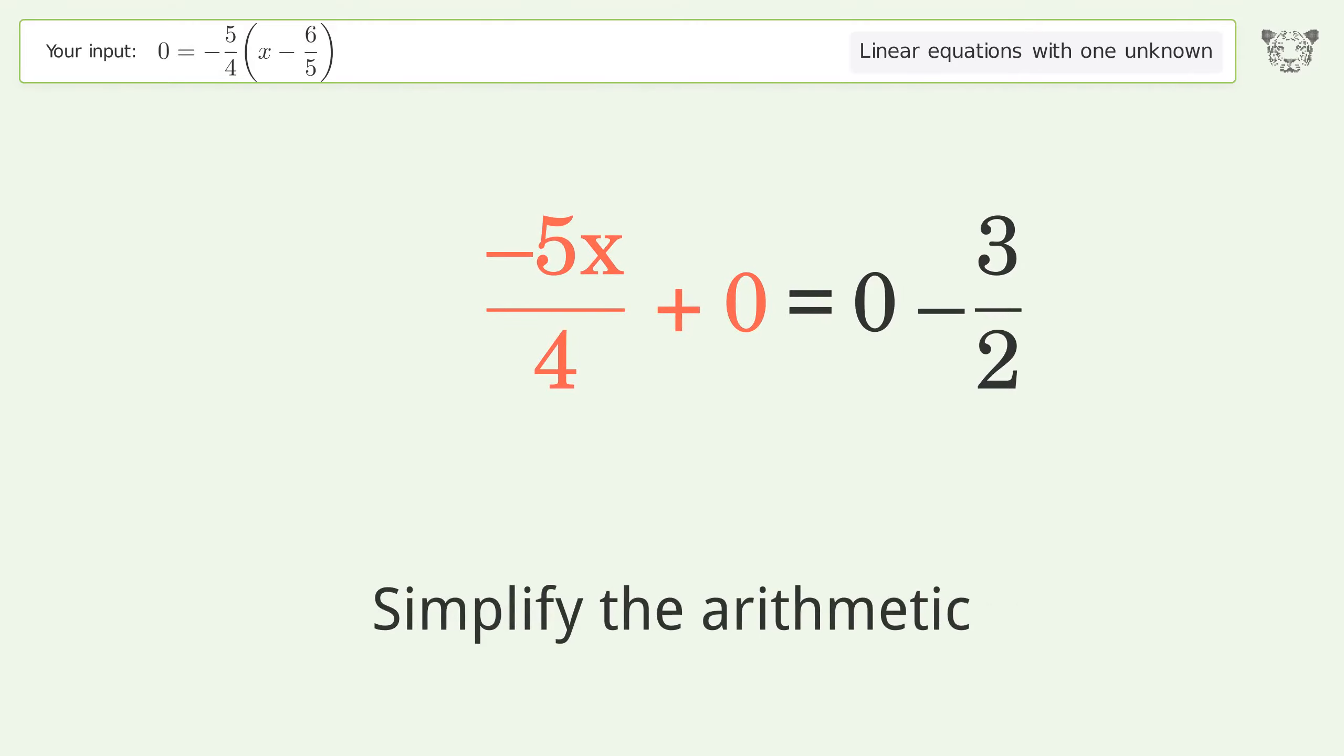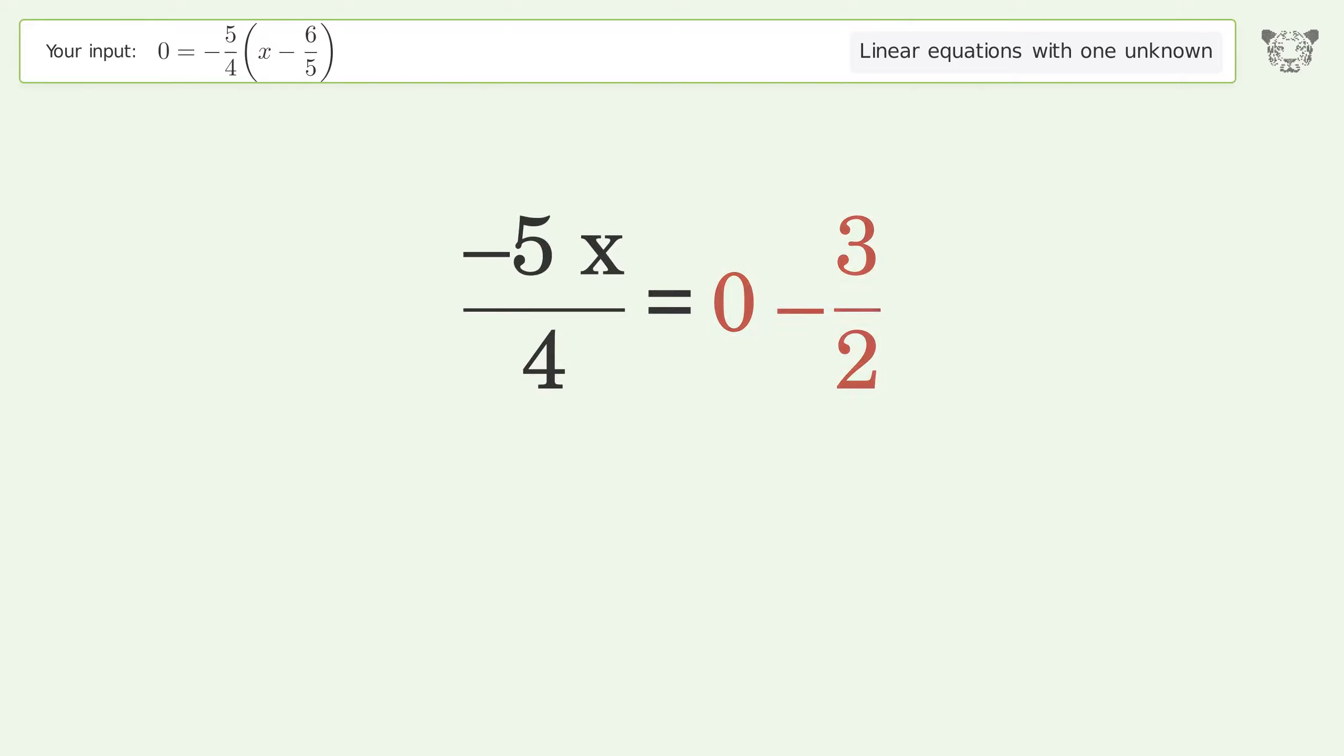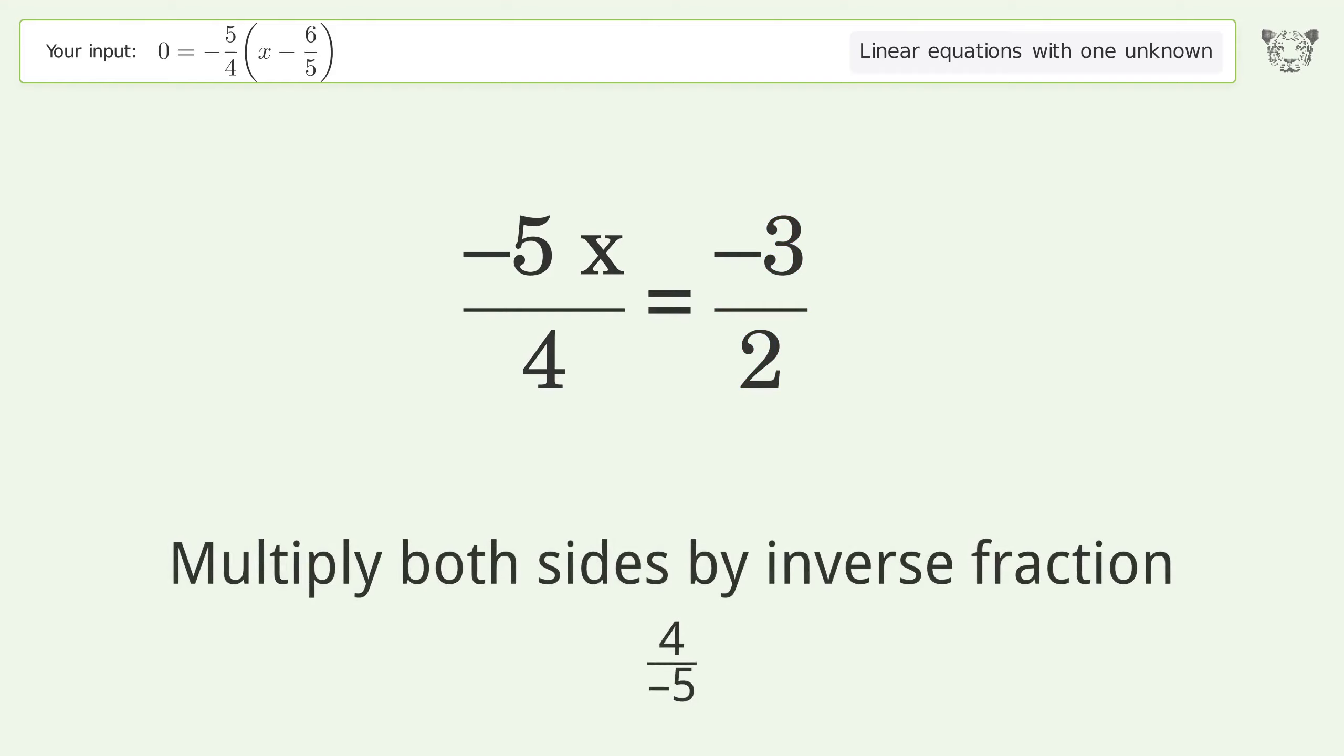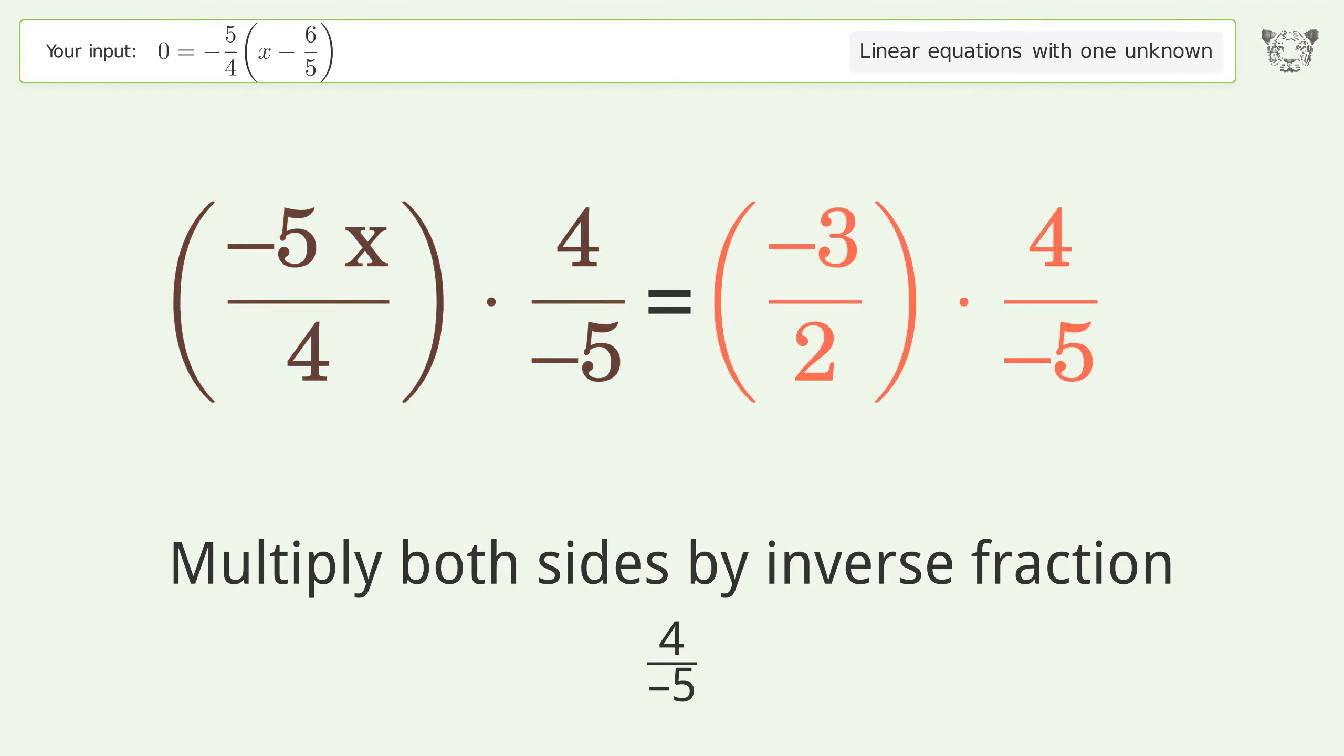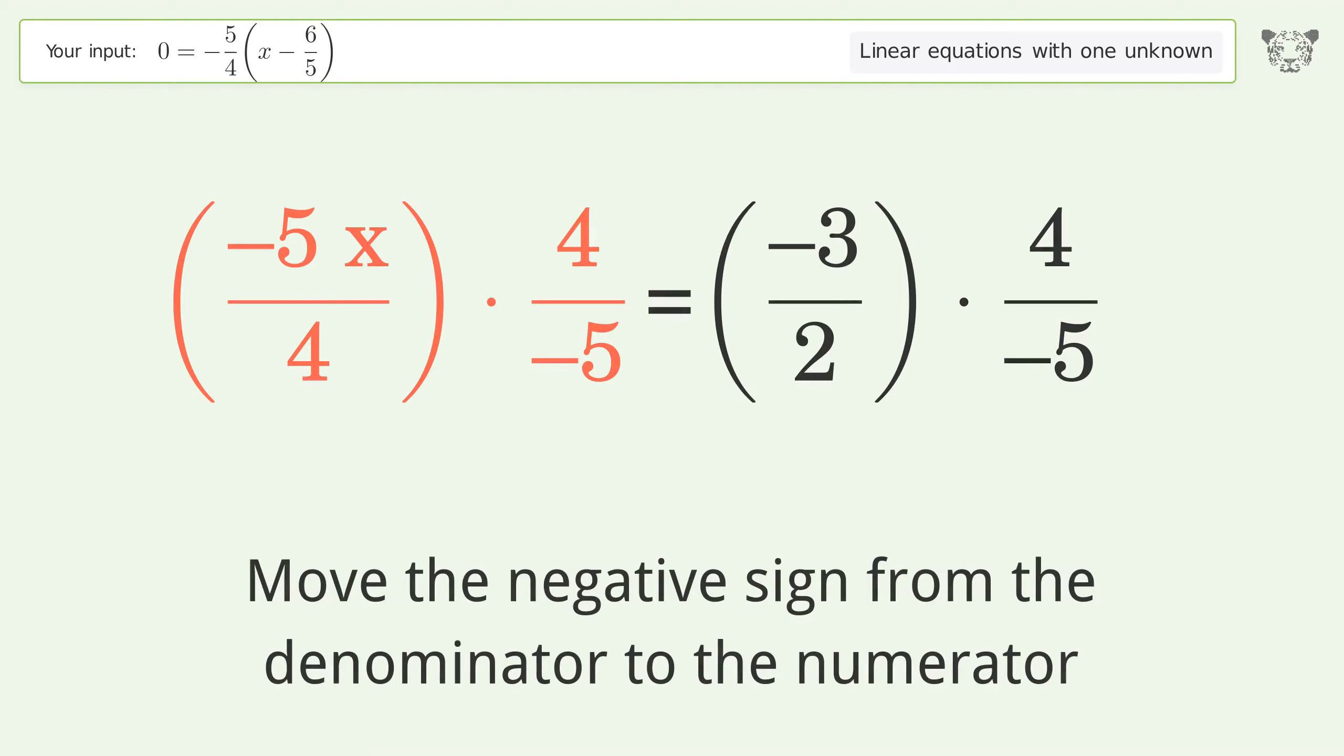Isolate the x. Multiply both sides by inverse fraction 4 over negative 5. Move the negative sign from the denominator to the numerator.